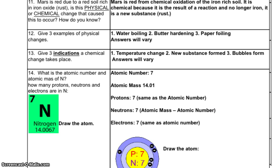And here we are back to 11 through 14. Let's look at 11. This is about our popular planet Mars that we've done some exploration on from here on Earth. Mars is red due to a red soil rich in iron oxide or common, everyday rust. Is this a physical or chemical change that caused this to occur? How do you know? Well, our answer reads, Mars is red from chemical oxidation of the iron rich soil. It is chemical, chemically changing, because it's the result of a reaction and it's no longer iron. It's now a new substance or rust. Remember, oxidizing, we talked about in class, is the process of rusting.